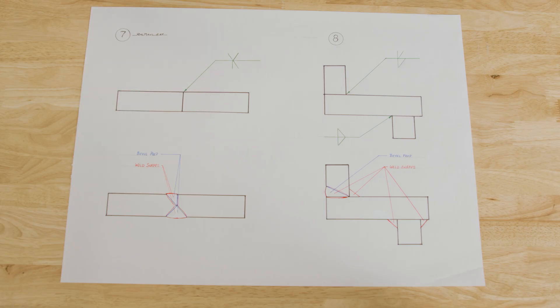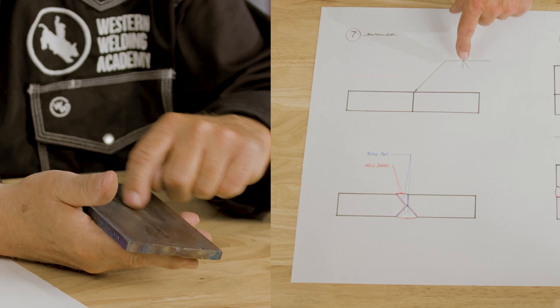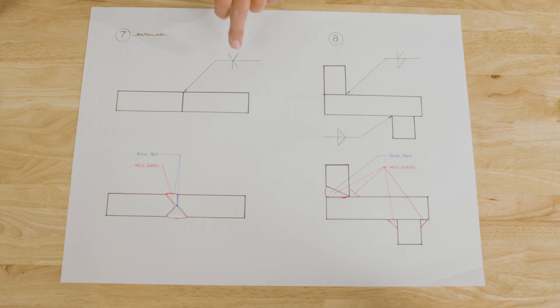Number seven is kind of an unusual weld that you'll get depending on what is engineered for this to do. But you have a full V and a half V on the same plate. Arrow side is the half V.